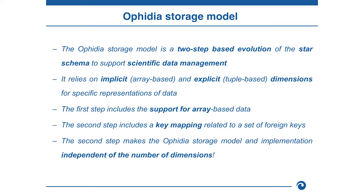The OPHIDIA storage model is a two-step-based evolution of the star schema to support scientific data management. It relies on implicit and explicit dimensions for the specific representation of data. The implicit dimension identifies the arrays; the explicit dimension identifies the tuples, the rows inside our tables. The first step includes support for array-based data, and the second step includes a key mapping related to a set of foreign keys. Importantly, the second step makes the OPHIDIA storage model implementation independent of the number of dimensions.